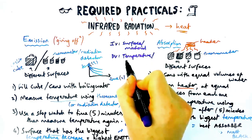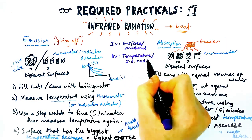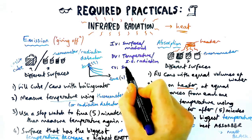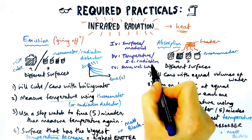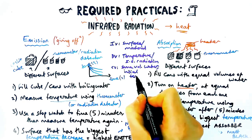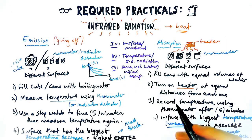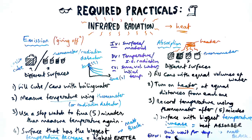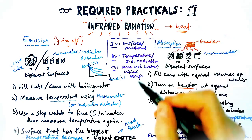Let's talk about variables. The independent variable — what we change — is the surface, material, or color. The dependent variable — what we measure — is temperature or infrared radiation, depending on which you're measuring. Control variables — what we keep the same — include the same volume of water in each can, the same initial temperature, and the detector being the same distance away if you're using a detector. All of these things could be asked in exams.